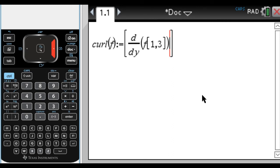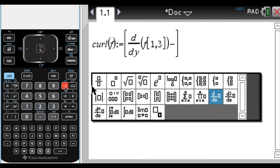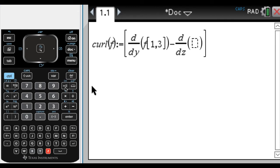And then I want to do minus, and it's going to be another derivative, this time with respect to z, and it's f, and in this case, it's in row one, column two. Okay, and that's the first component of the curl. So that's the i component, or the x component, whatever you want to call it. And now we need the j component.